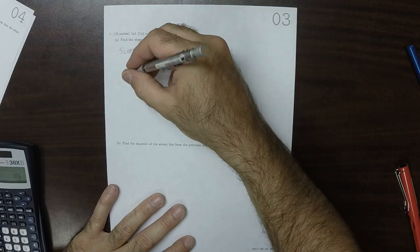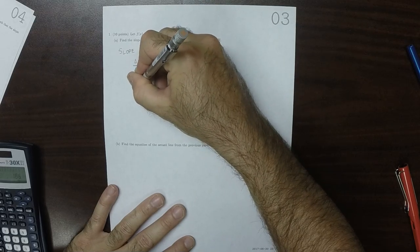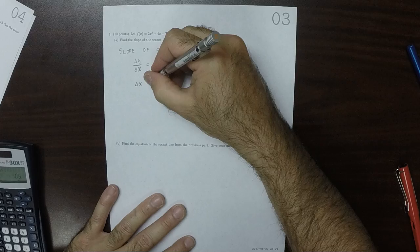So let's do them individually. I can see that the change in x, 3 minus negative 2, well that'd be 5.